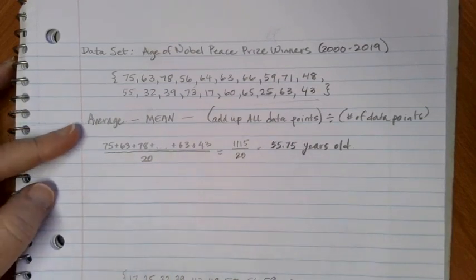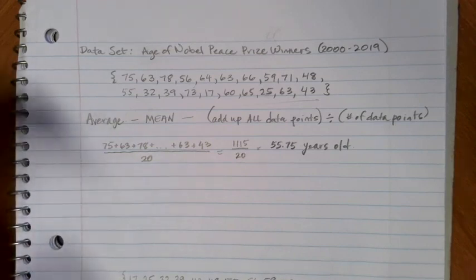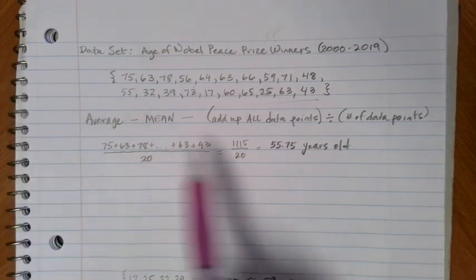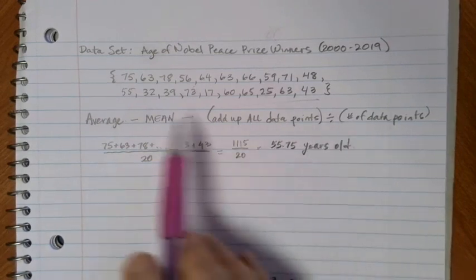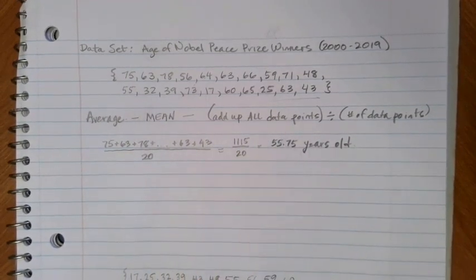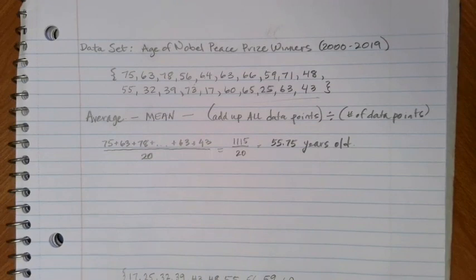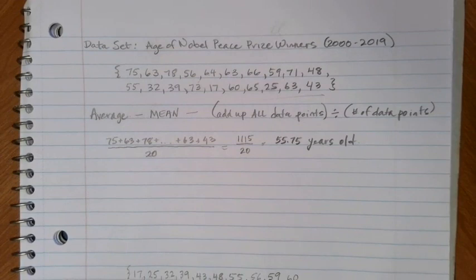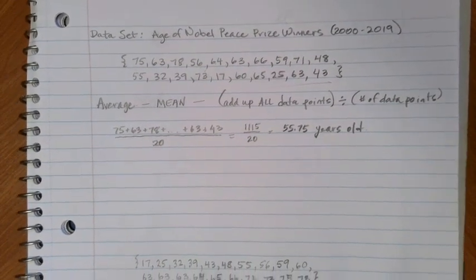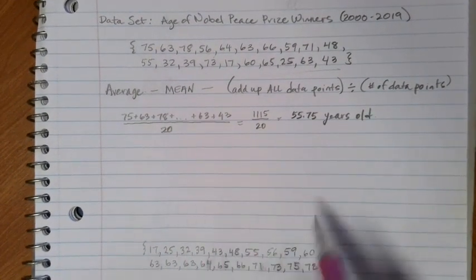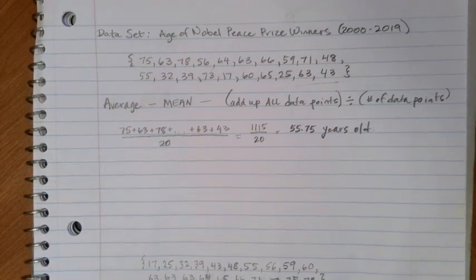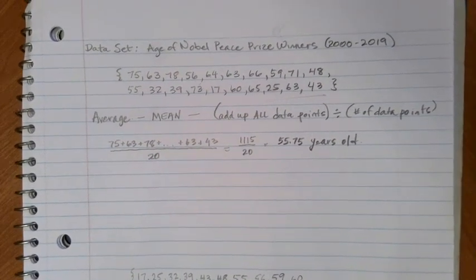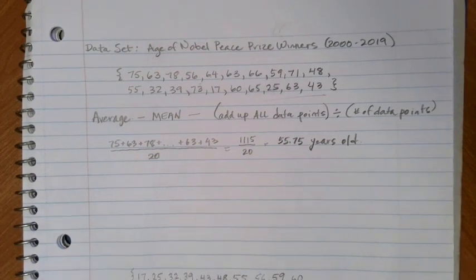Now there are other ways to talk about this central value. The average is nice because it uses all of the data points and takes all of them into consideration in my calculation. However, sometimes we're more interested in a middle of the road value. When we're talking about that middle of the road value, what we want to look at is something that we call the median.